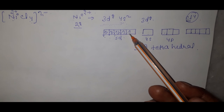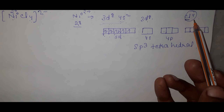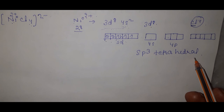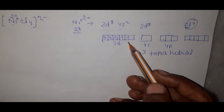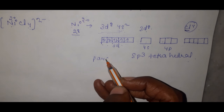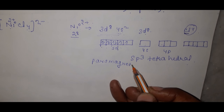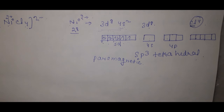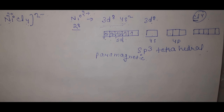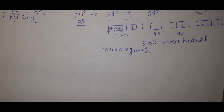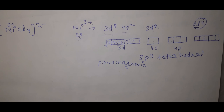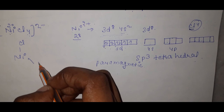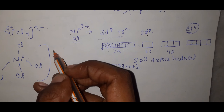Since Cl⁻ is a weak ligand, the 3d unpaired electrons remain unpaired. The complex forms an outer orbital complex using sp³ hybridization. The shape is tetrahedral and the complex shows paramagnetic character due to unpaired electrons.